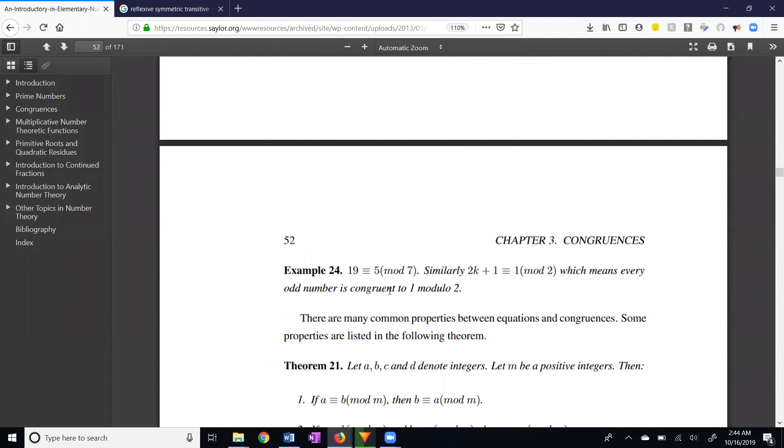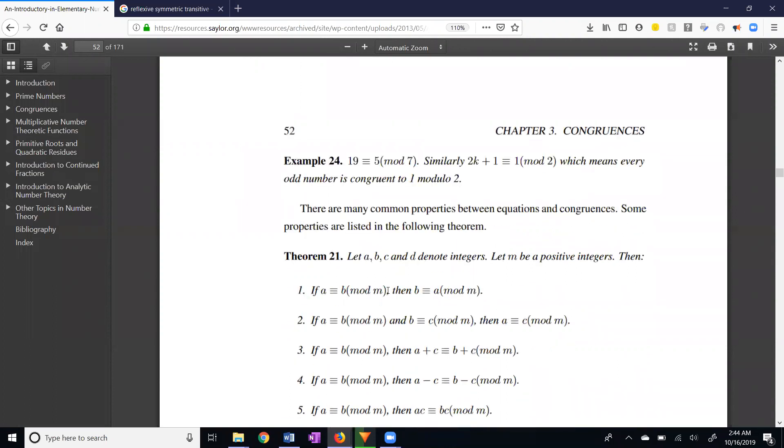I'll let you read example 24 on your own. It's a good example. Then we have a whole slew of theorems. It turns out that congruence, the triple bar, acts very similar to the double bar, the equal sign.